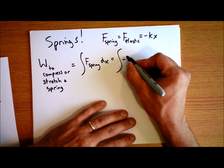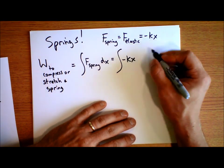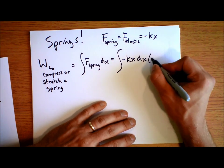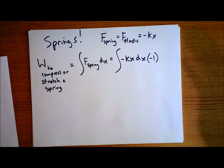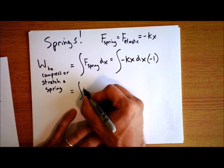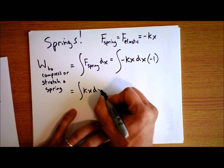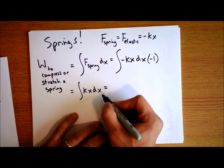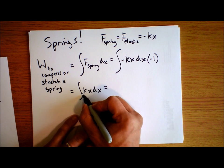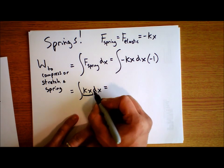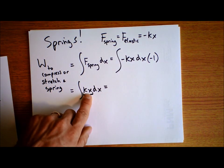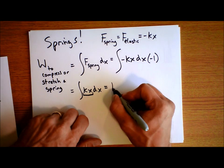If I'm moving the spring in one direction, the force points the opposite way, so we get an extra minus sign from the dot product. Plugging in: negative kx times dx times negative 1, which simplifies to the integral of kx dx. The constant k doesn't change as x changes, so k pulls out: k times the integral of x dx.